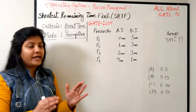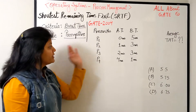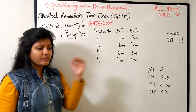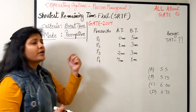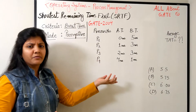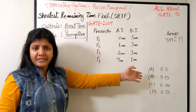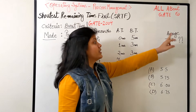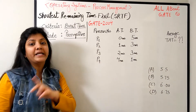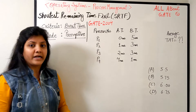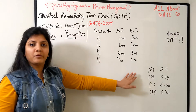So to understand this algorithm in detail, I have taken a previous year GATE question from 2004. The data of the question is right here. I have taken up the theoretical description of the question. The question simply says: consider a system where we have processes P1 to P4, their respective arrival time and burst time is given in milliseconds. You have to find out the average turnaround time while you schedule the processes using the shortest remaining time first algorithm.